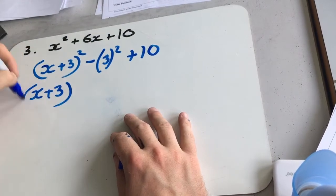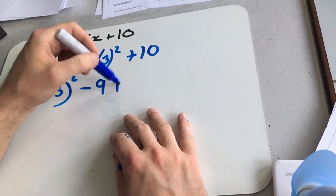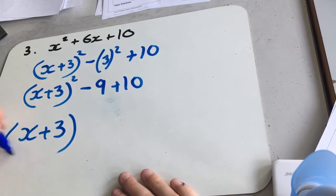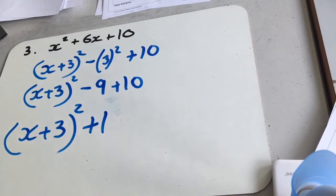So x plus 3 squared minus 9 plus 10. So x plus 3 squared plus 1.